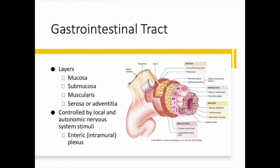Our GI tract is controlled by not only local stimuli but also autonomic nervous system stimuli. We would say that this is happening through an intramural or enteric plexus, which is located in the different layers of the GI walls.